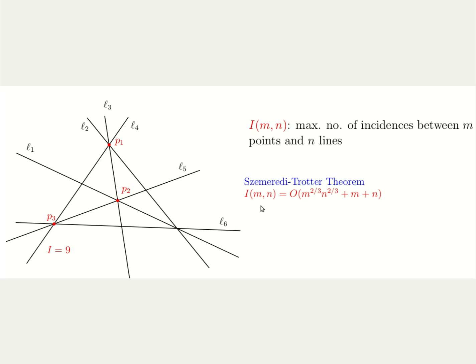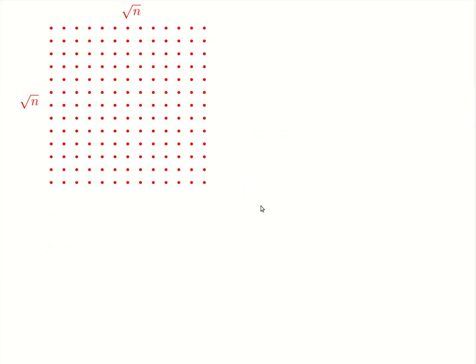To do so, it is obvious that we should be placing our points in such a way that each line that we draw passes through many points. The easiest way to achieve such a thing is to use grids. So let's start by looking at a grid of size n or n points. The side length of such a grid should be square root n.